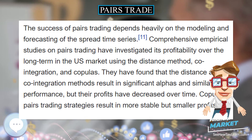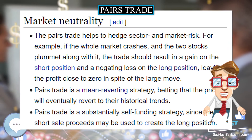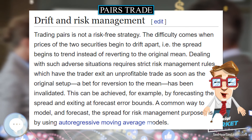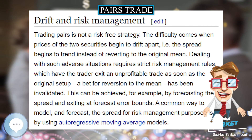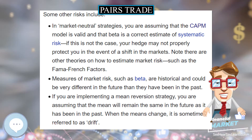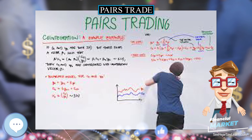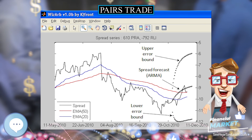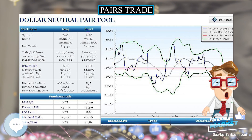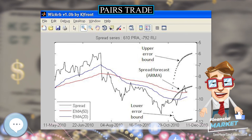Drift and risk management. Trading pairs is not a risk-free strategy. The difficulty comes when prices of the two securities begin to drift apart — i.e. the spread begins to trend instead of reverting to the original mean. Dealing with such adverse situations requires strict risk management rules, which have the trader exit an unprofitable trade as soon as the original setup — a bet for reversion to the mean — has been invalidated. This can be achieved, for example, by forecasting the spread and exiting at forecast error bounds. A common way to model and forecast the spread for risk management purposes is by using auto-regressive moving average (ARMA) models.